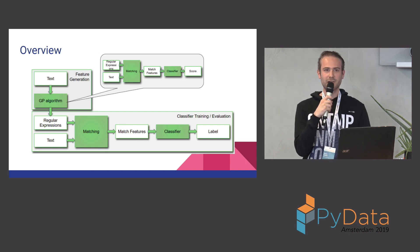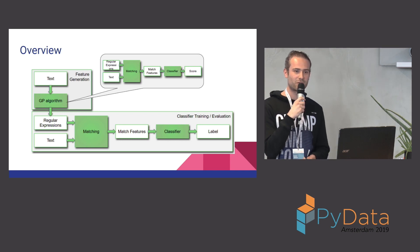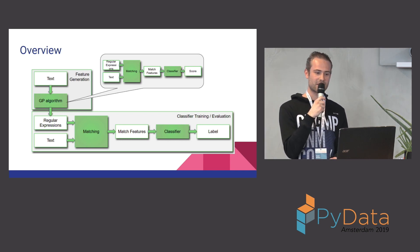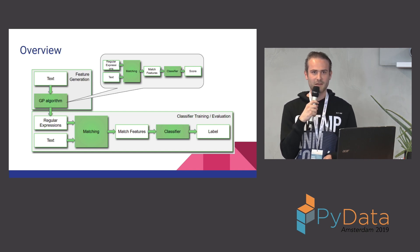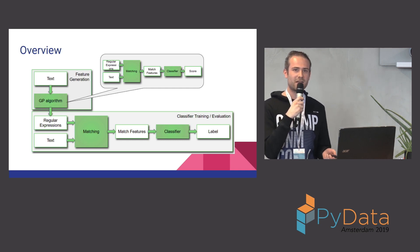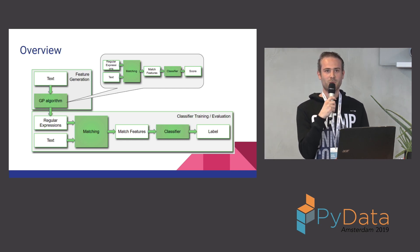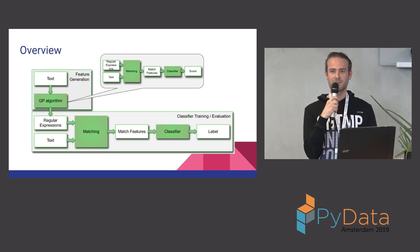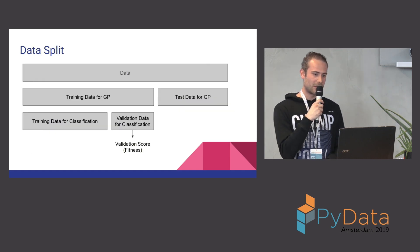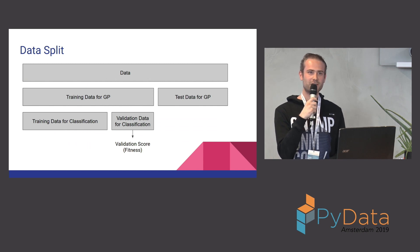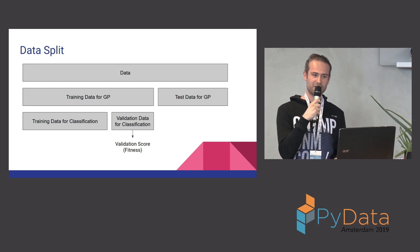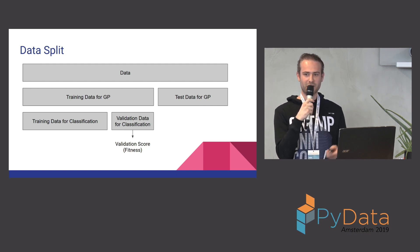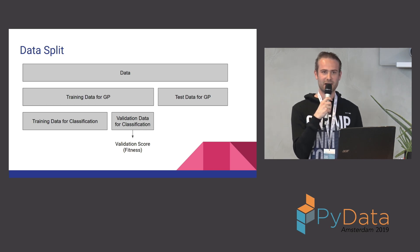Internally, the GP algorithm follows the same steps to determine what is actually a good regex. So it proposes a regex, then gets the features on text, trains a classifier, and then evaluates the classifier to determine a score, which indicates how well this regular expression works. This actually requires you to split the dataset multiple times, because you need both training data for the classifier, but then you also need to evaluate the classifier. So you have a second type of training data to determine the validation score.